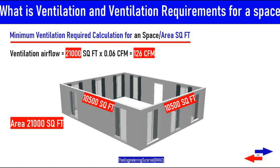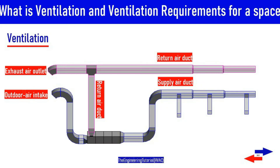Let's discuss more about ventilation and outdoor air — why and what the outdoor air is used for. Outdoor air is often used to dilute or remove contaminants from indoor air. The intentional introduction of outdoor air into a space through the use of a building HVAC system is called ventilation. The outdoor air must be cooled and dehumidified before it can be delivered to the space, creating an additional load on the air conditioning equipment.